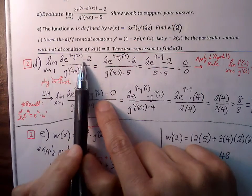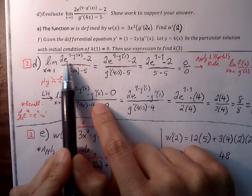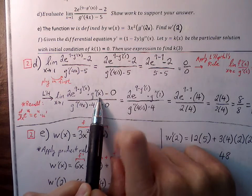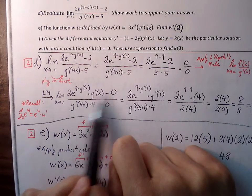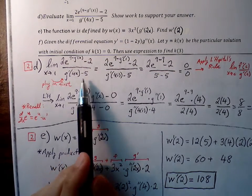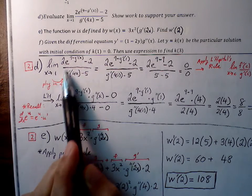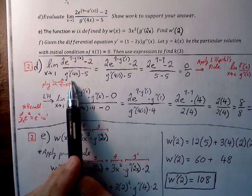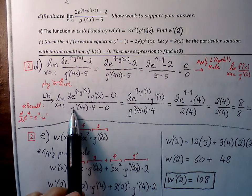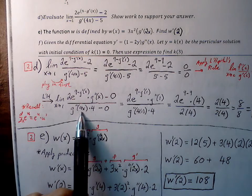We find the derivative of the numerator and denominator separately. For the numerator: the rule for e to the u is e to the u times u prime, so we get two e to the u times u prime. The nine goes away and G prime becomes G double prime. The negative two constant goes to zero. For the denominator: G prime of four x — this is a chain rule. The outside G prime turns into G double prime, the inside four x stays unchanged, and we multiply by the inside derivative of four. The five goes to zero, leaving G double prime of four x times four.